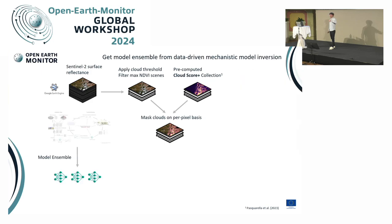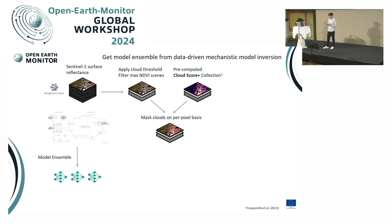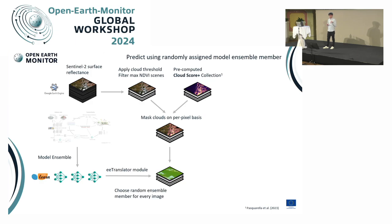Now we bring in the trained models from our training loop. We have one model per k-fold split, per cross-validation fold, so we have a model ensemble. We randomly assign one of the models to each image — a programmatic way of applying this ensemble without using too much computation.